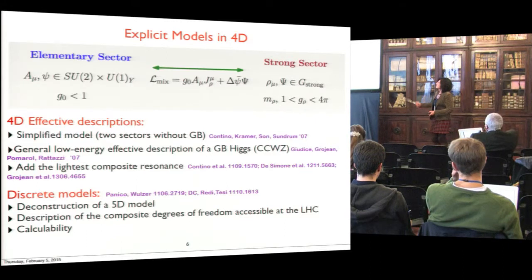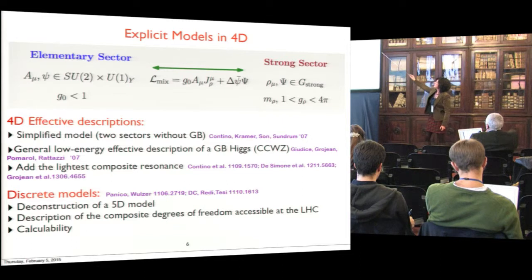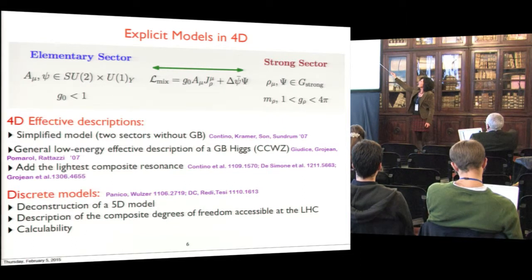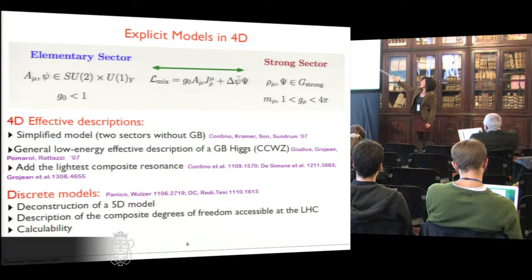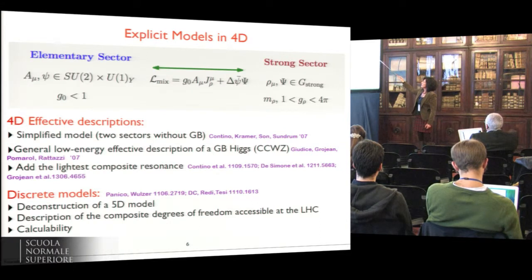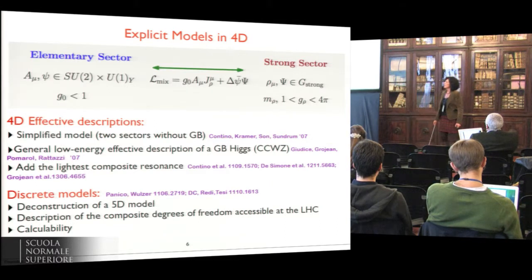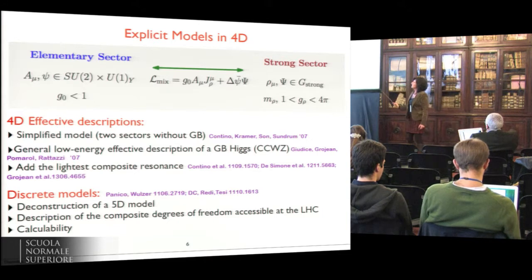To construct explicit models in four dimensions, the ingredients must be the strong sector with extra resonances — both spin-1 and spin-1/2 — with a typical mass at the composite scale and a strong coupling. The elementary sector describes the standard model fields, along with mixing between these two sectors.